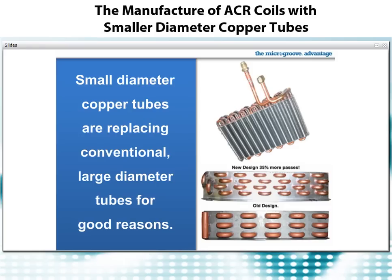This photo represents a real-life example of what we just reviewed, taken from a catalog on the Internet. The new design shows smaller diameter tubes providing 35% more passes, resulting in considerably more heat transfer. The tubes in the new design are arranged in a staggered pattern, which will further improve the efficiency of the coil. This ability to arrange tubes in more efficient geometric patterns is yet another advantage of round copper tubes.